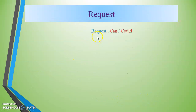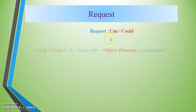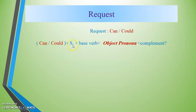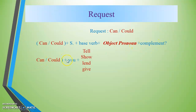Now the second point: can and could. Can and could are used for making requests. The structure is: can/could + subject + base verb + object + complement. For example: 'Can you cook?' We use can and could for polite requests.